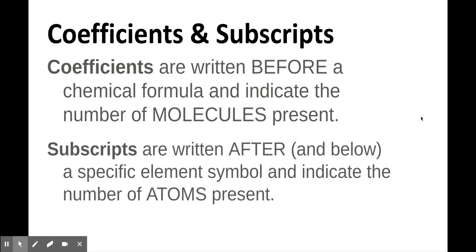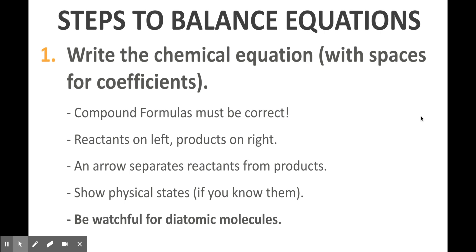We want to be able to balance chemical equations, and there are basically three steps that you're going to follow, with a fourth optional step to simplify if necessary. I'm going to talk you through those three steps right now and then show you two examples at the end of the video.